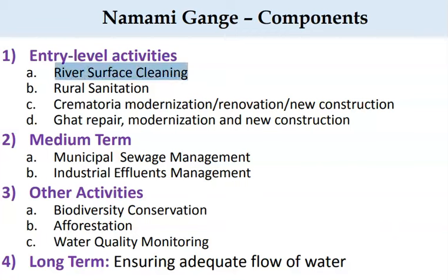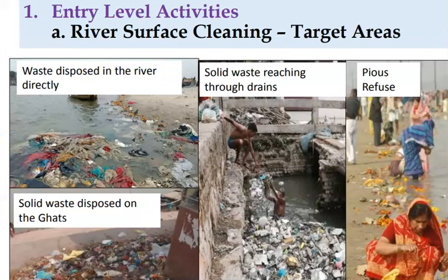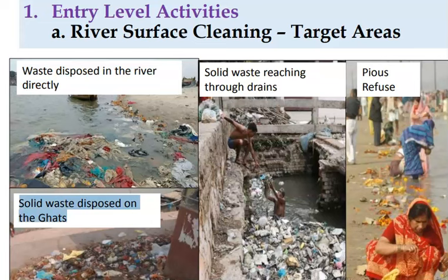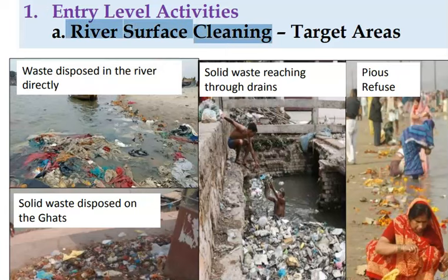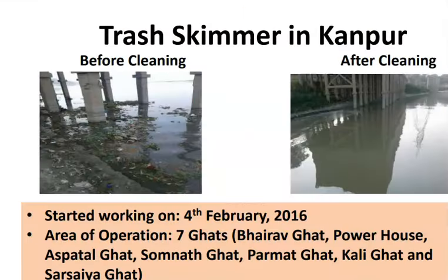Many times waste is disposed directly into rivers. The sources of pollution include man-made waste disposal directly in the river, solid waste disposal on the ghat, solid waste draining, solid waste reaching through drains, and pious refuse. The first activity is river surface cleaning, done by providing trash skimmers.